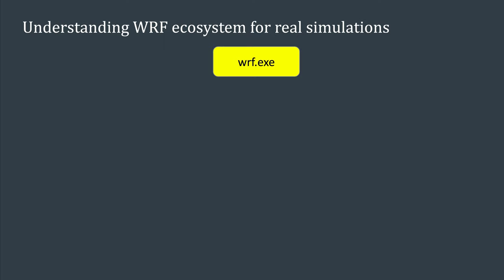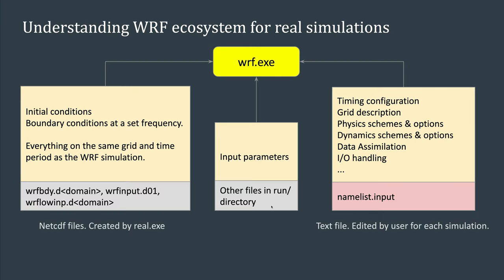To run a WRF simulation using WRF.exe, this program takes different types of input. It needs a namelist file called namelist.input — a text file that can be edited by the user. This namelist contains information about the timing of the simulation, the grid, the physical and dynamical schemes you want to use, information about the data assimilation, IO handling, and so forth. You also need a range of files containing parameters for different schemes that are provided with the WRF model.